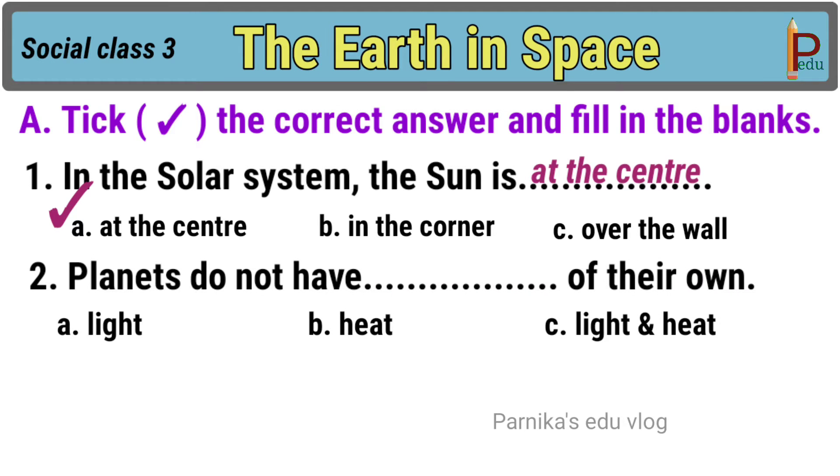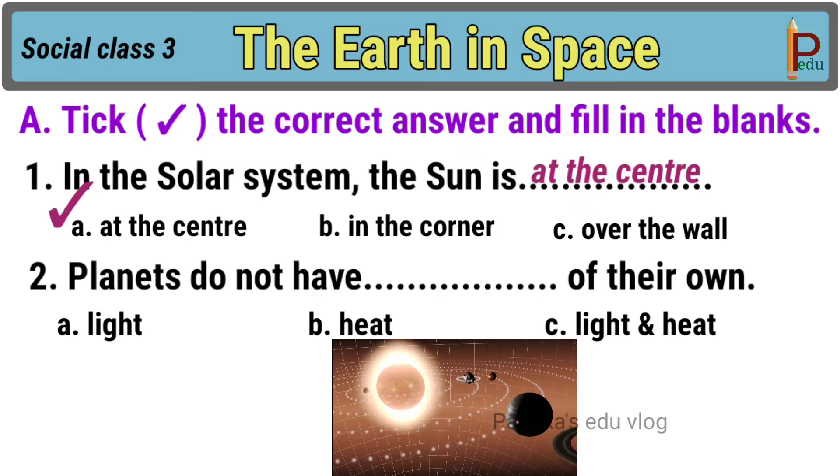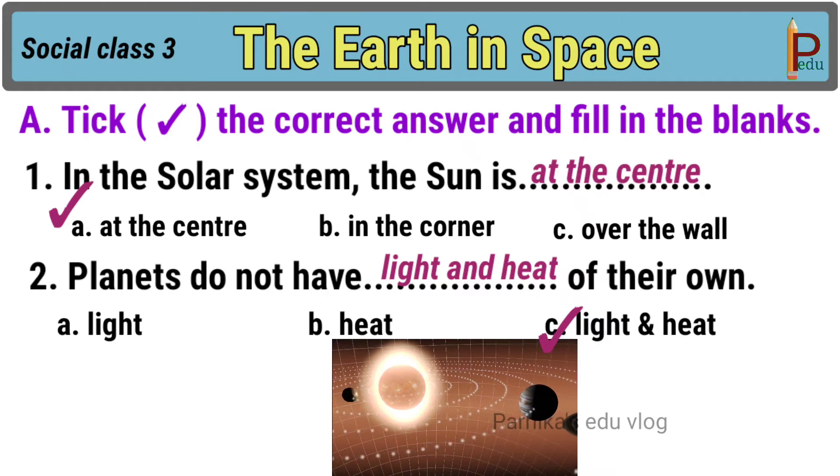Second one, planets do not have dash of their own. The answer is C, light and heat.